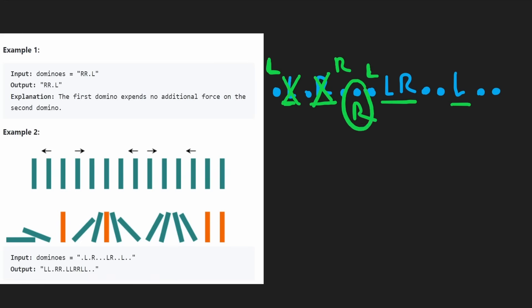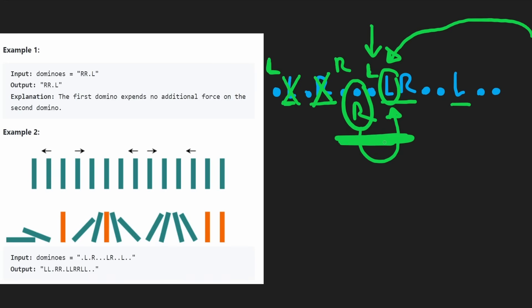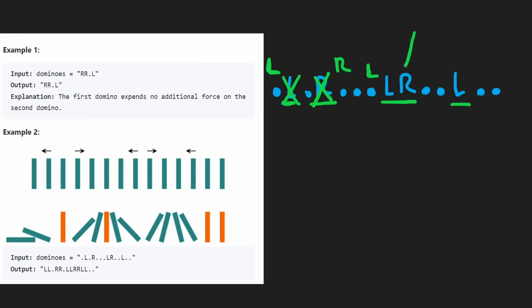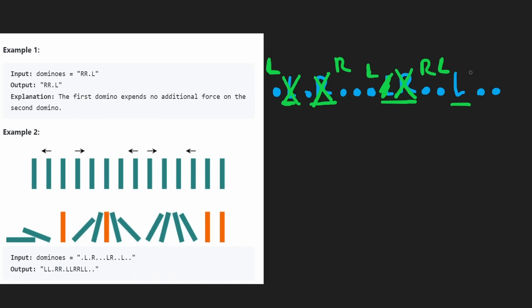Moving to the next right domino — there's a standing straight up domino to the right, and no left domino after it, so it gets changed to R. Then our last domino, leaning left, knocks over the one to its left, making it a left domino. Notice how all of that happened within one second — that was our first iteration through our queue, and we updated the state of all the dominoes.